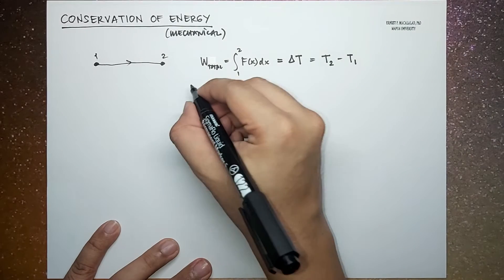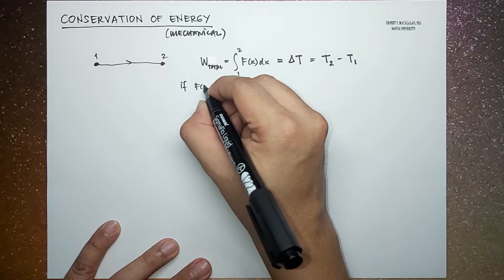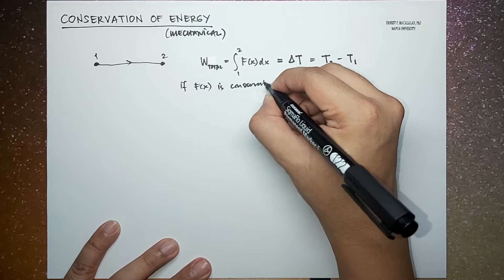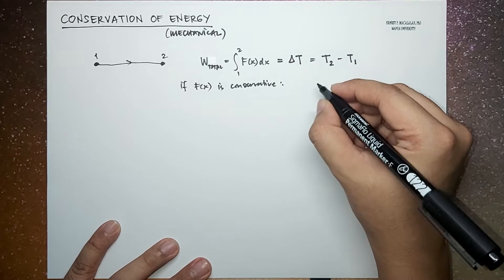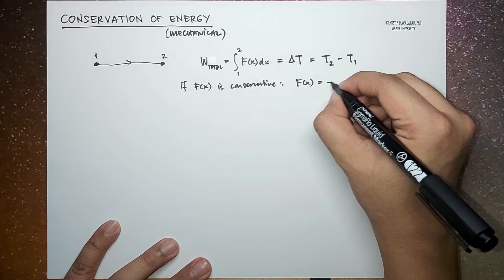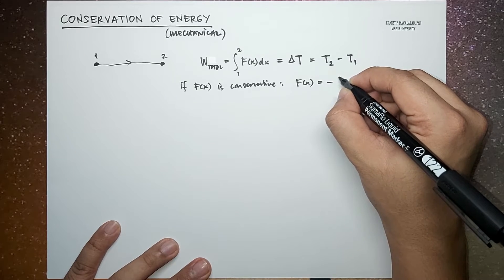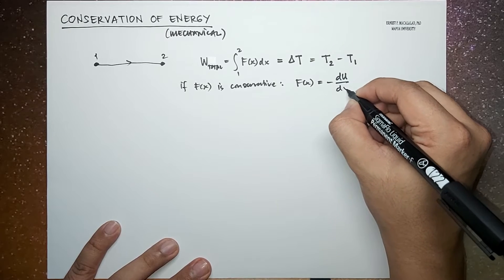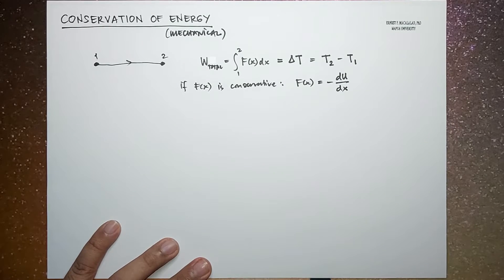Now if, for example, F is conservative, so that means the force is equal to the negative derivative of your potential energy with respect to x.